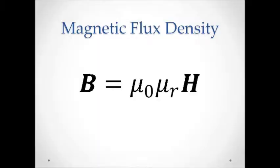To calculate the magnetic flux density, we use this equation, where mu r is the relative permeability, which is dependent on the material used as the core. So using these two equations, we can see the magnetic field and flux density around the electromagnet, shown in this figure.